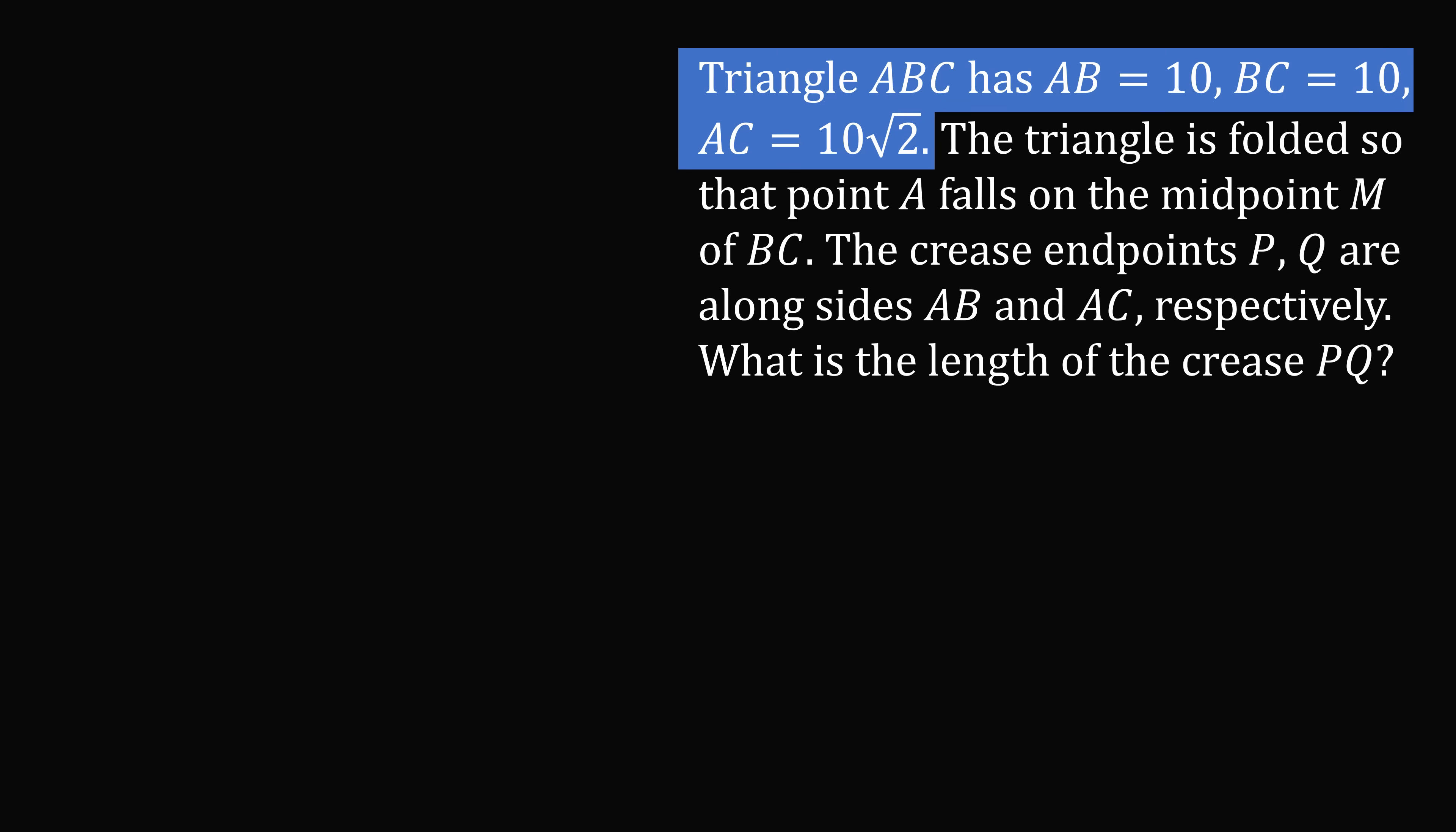Triangle ABC has AB equal to 10, BC equal to 10, and AC equal to 10 root 2. We first observe that AB squared plus BC squared is equal to AC squared, and that means ABC is a right triangle with hypotenuse AC.